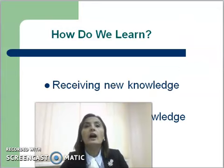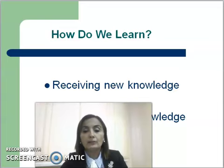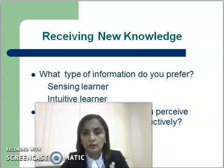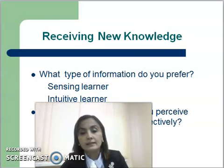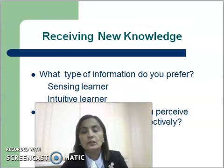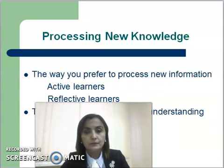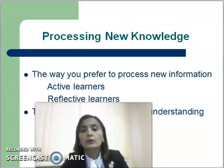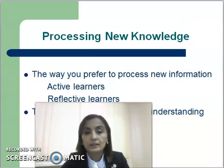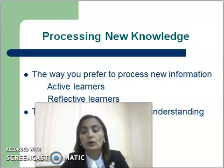Let's discuss the question: how do we learn? We may learn by acquiring, by receiving new knowledge and by processing new knowledge. What type of information do you prefer? Sensing learner and intuitive learner. What sensory channel do you perceive external information most effectively? Visual learner and verbal learner. Processing new knowledge — the way you prefer to process new information: active learners and reflective learners. The way you progress toward understanding: sequential learners and global learners.